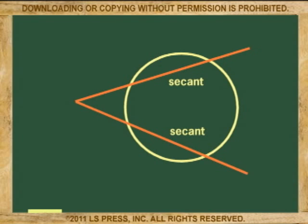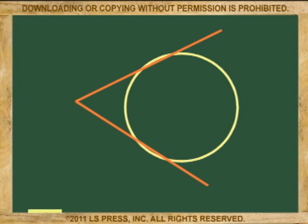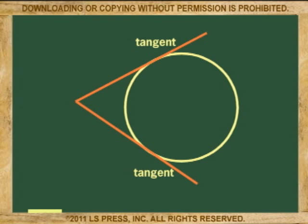Now let's continue opening this secant until we turn it into a tangent. Now we have two tangents.